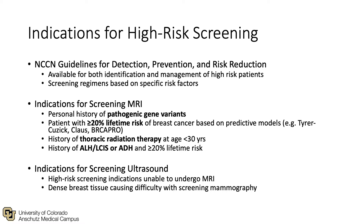Several of the most common indications for screening MRI include history of pathologic gene variants, patients with a greater than 20% lifetime risk of breast cancer based on predictive models, a history of thoracic radiation therapy prior to age 30 years, and a history of atypical hyperplasia or LCIS with a greater than 20% lifetime risk based on risk models. Screening ultrasound can be used for high-risk indications in patients who are unable to undergo MRI, and for patients with dense breast tissue that causes difficulty with screening mammography.